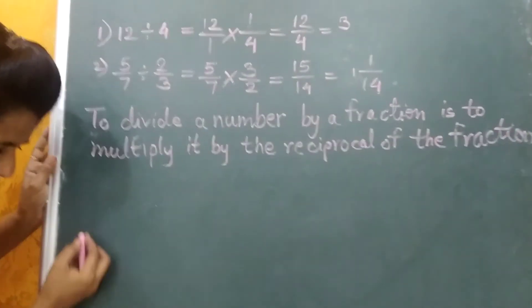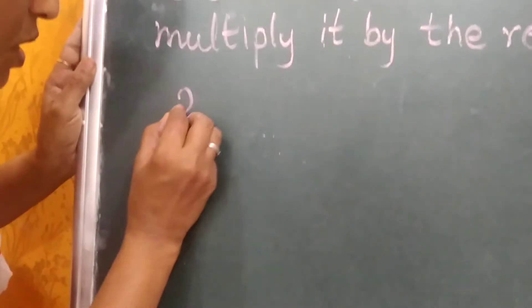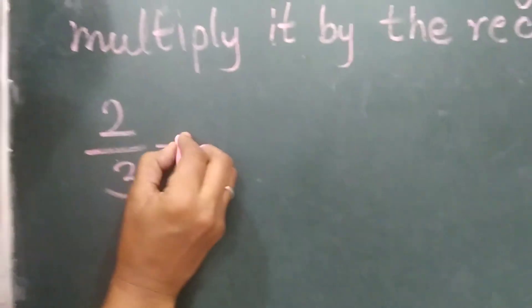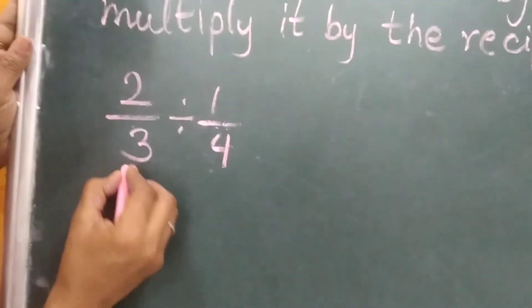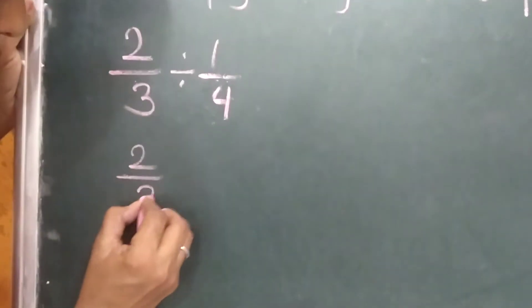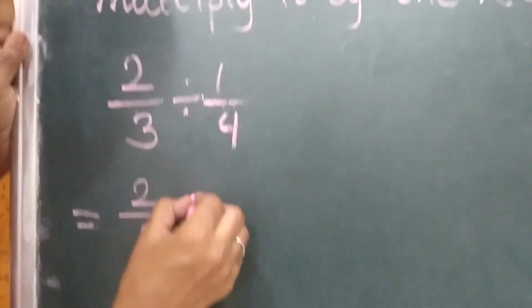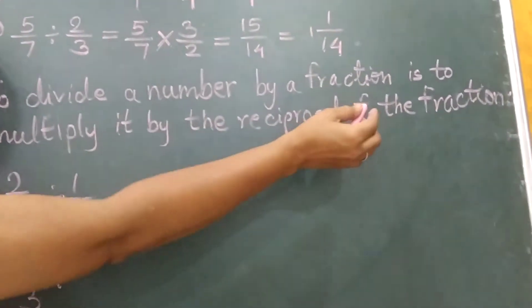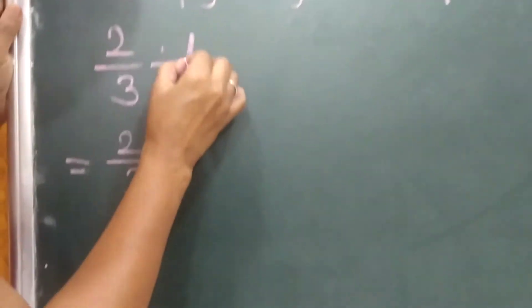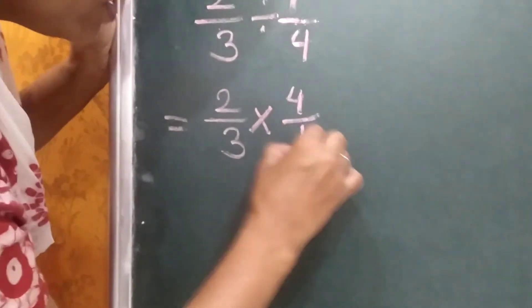Let's see one more example. Here, 2 upon 3 divided by 1 upon 4. We will take 2 upon 3 as it is. To divide a number by a fraction is to multiply it by the reciprocal of the fraction. So we will multiply by the reciprocal, which becomes 4 upon 1.